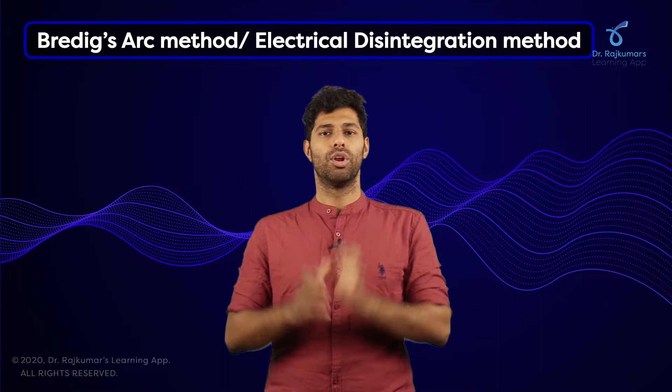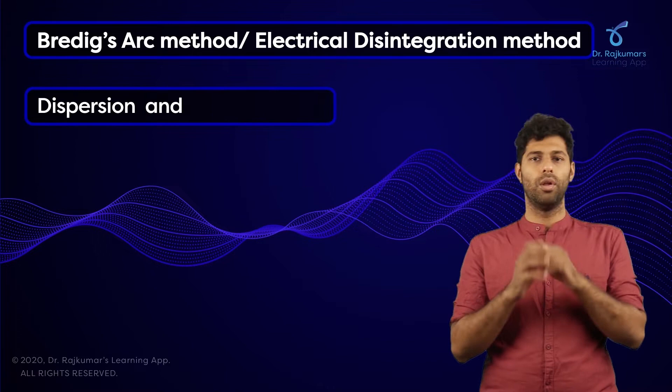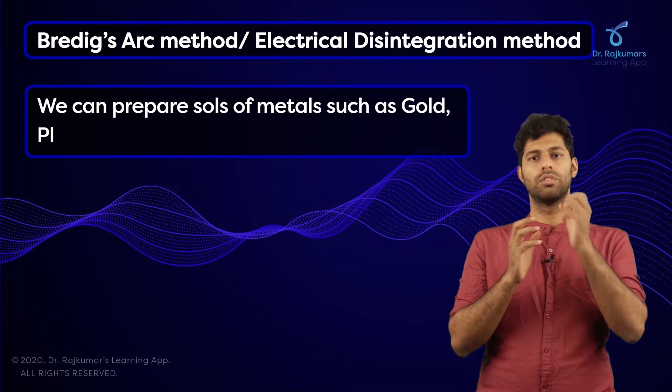What exactly happens in the case of Bredig's Arc method? Well, this process involves dispersion as well as condensation. With this process, we prepare salts of metals like gold and platinum.